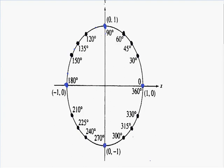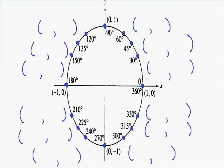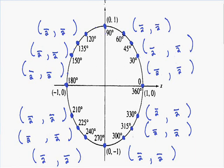How do we plot all the other points on the circle? The first thing to do is put a 2 in every denominator of every coordinate. Then for the x-coordinates, start in the top right corner with 3 and count down: 3, 2, 1, then go back up: 1, 2, 3. For the y-coordinates, do the opposite — start with 1, go up: 1, 2, 3, then back down: 3, 2, 1.